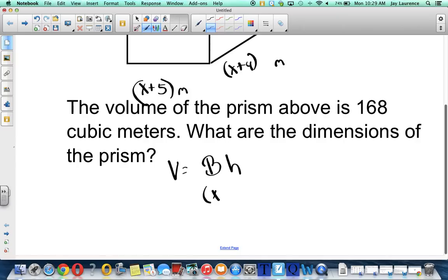So I'm going to take area of the base, which I get by multiplying quantity of x plus five times quantity of x plus four. And then multiply it by the height. Remember, the volume of a rectangular prism can be found by doing capital B, which is the area of the base, times the height.